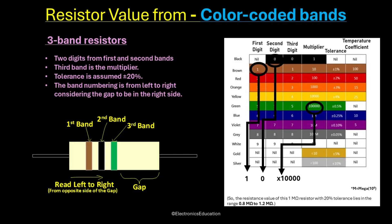The first two digits are derived from the first and second color bands. The third color band is the multiplier. So in this case, the bands are brown, black, and green. The tolerance for 3-band scheme is assumed to be 20%.